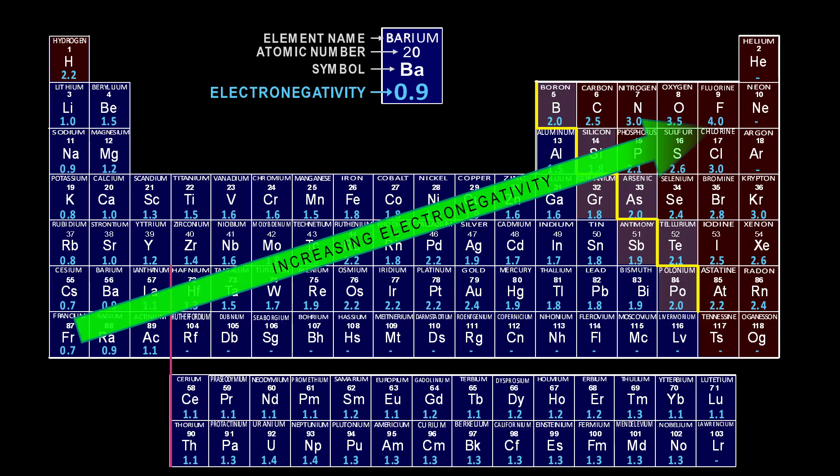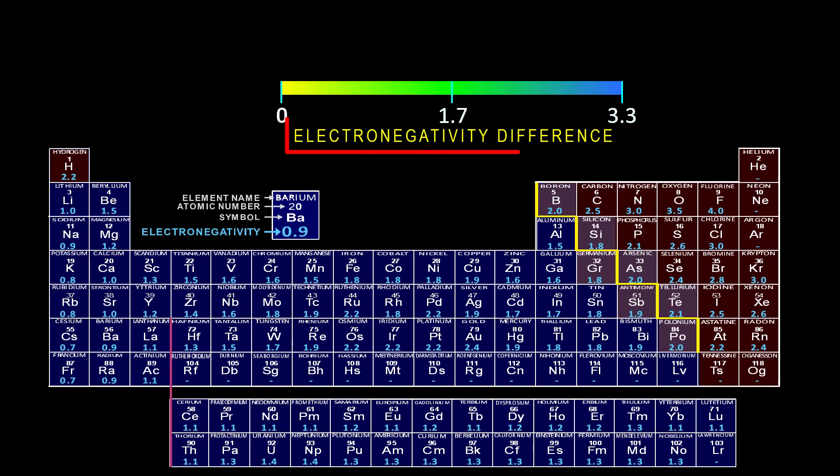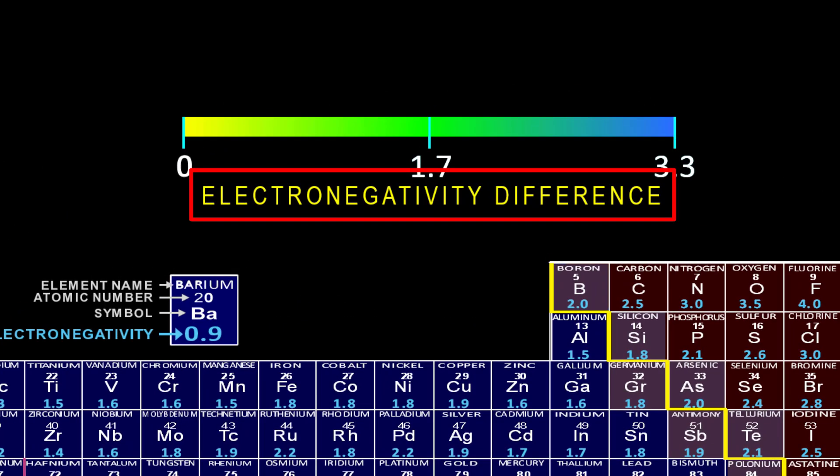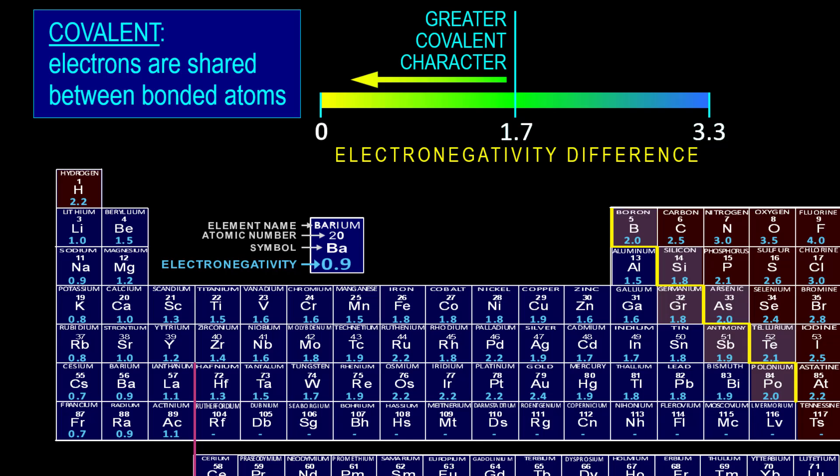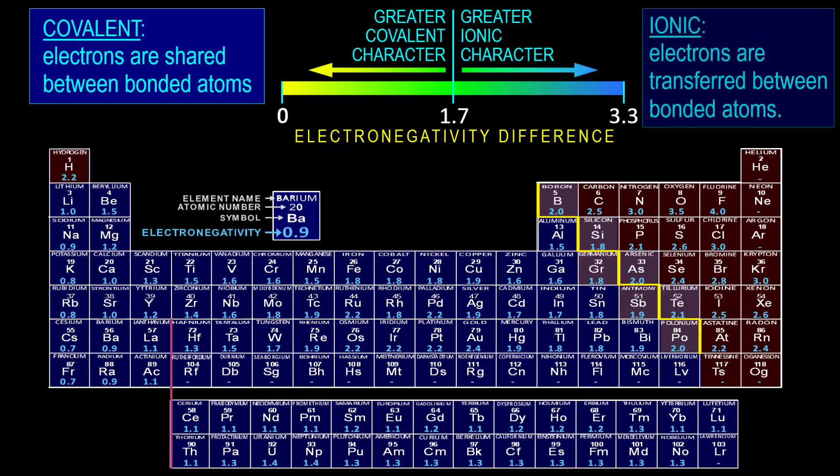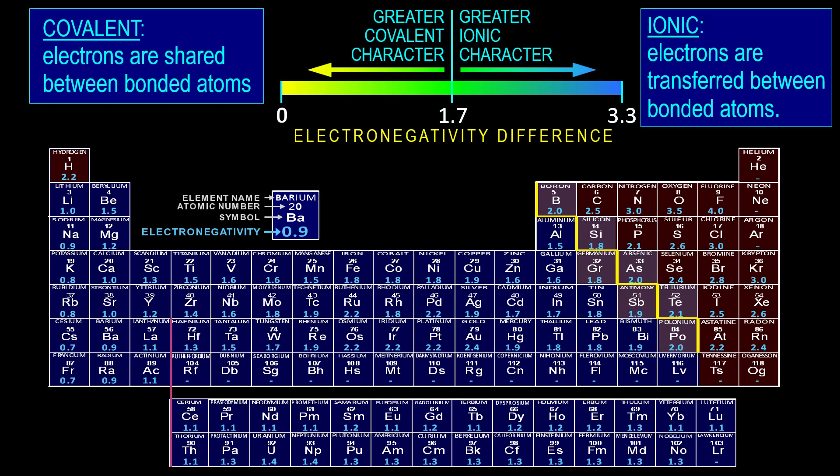Across the periodic table, electronegativity values increase from bottom to top and from left to right. But it is the electronegativity difference between two bonded atoms that give us bond character or bond type, with smaller electronegativity difference being more covalent, meaning shared bonding electrons, versus higher electronegativity difference being more ionic, which is a transfer of electrons between bonded atoms.